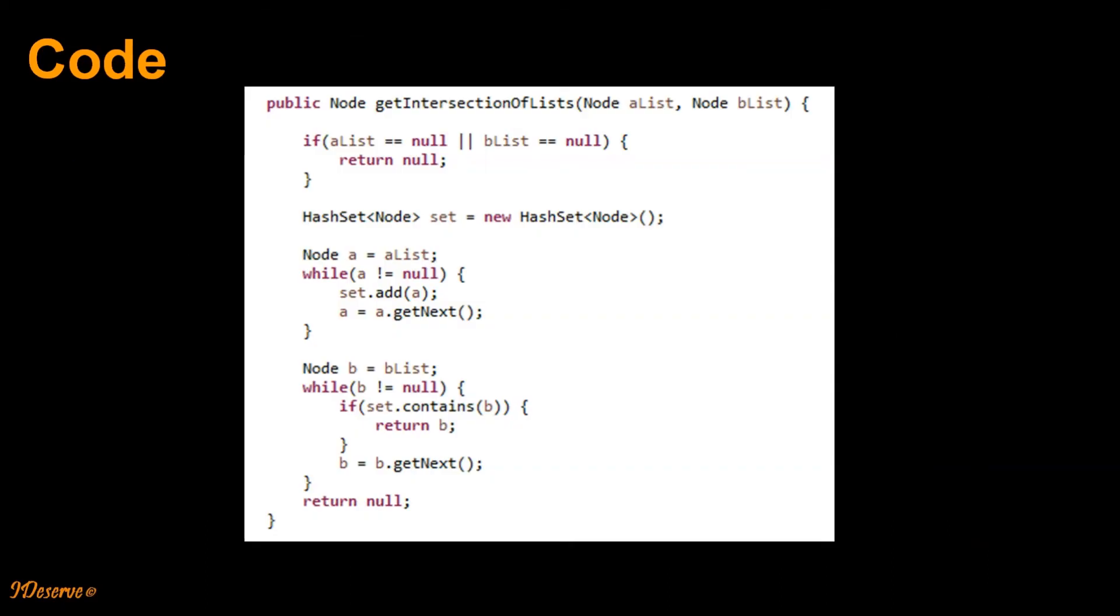The code again here is very straightforward. We create one hash set and we add all elements of list A, and then traverse list B and try to find the first element which we are able to find in hash set.